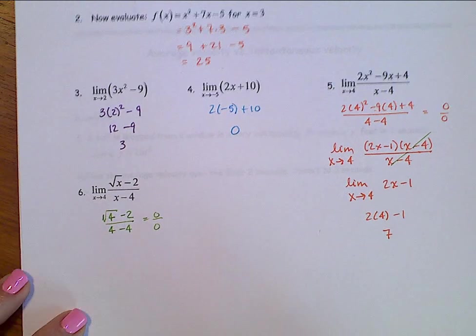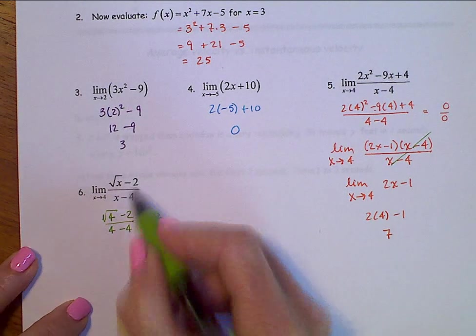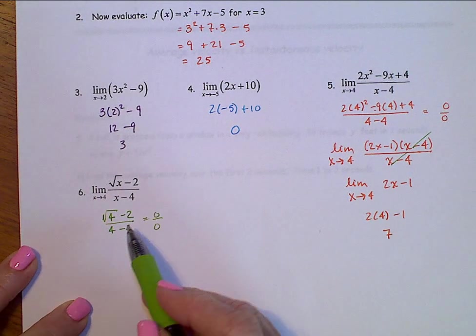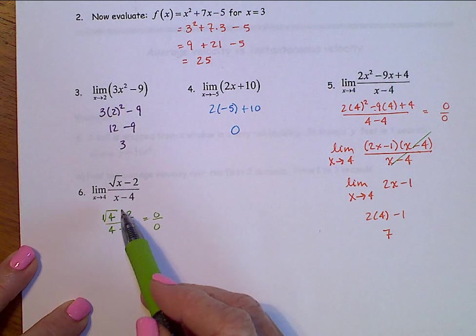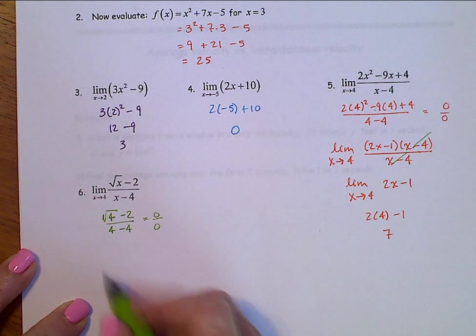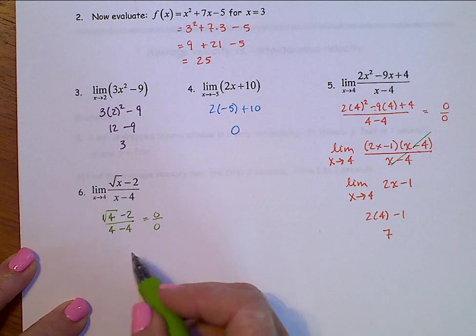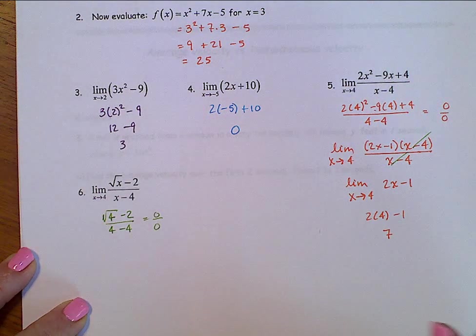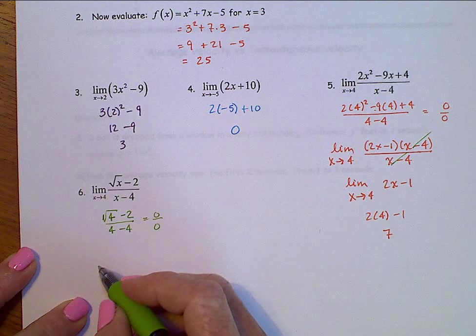Alright, so, this one, factoring is really not a good option here. Another option is called rationalizing the numerator. You have rationalized a denominator in the past, but I don't know that you've rationalized a numerator.